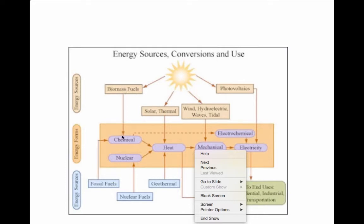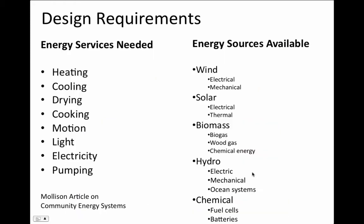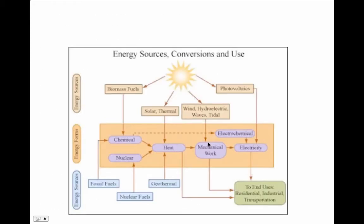The biomass fuel energy is actually chemical energy, which can then be converted to heat, which can then be converted to mechanical work through an engine, and then can turn a generator and make electricity, providing services that we all want. You can also look at chemical energy becoming electrochemical energy in a battery, creating electricity. Geothermal energy can create heat and make mechanical work. This is a nice diagram showing how all the different energy sources get converted and flow into services.